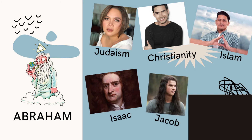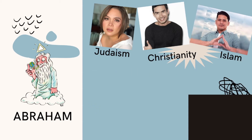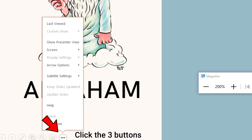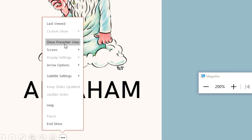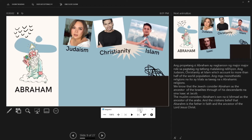I need a guide so I know what to say next. In other words, I need to see my notes while I am recording myself. So the next thing I will do is click the three-dot button and select Show Presenter View. Now I can see my notes.